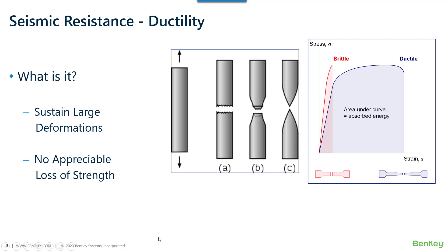If you look at the graph on the right-hand side, the stress in the structure remains almost the same but the strain has increased by maybe four or five times. As a result, the area under the curve, or the absorbed energy, is very large before the structure actually fails.